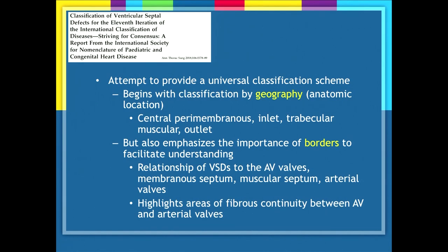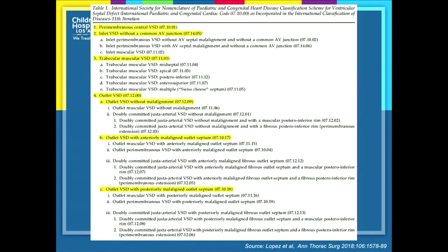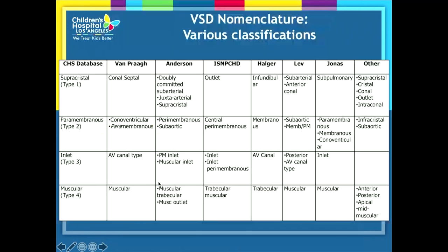The ISN-PCHD classification also emphasized the borders to facilitate understanding — the relationship of VSDs to the AV valves, membranous septum, muscular septum, arterial valves, and areas of fibrous continuity between the AV and arterial valves. The four major classifications remain the same, but the nomenclature was refined and malalignment VSDs were folded in as well, distinguishing outlet VSDs without malalignment (supercrystal/subpulmonary) from those with malalignment.